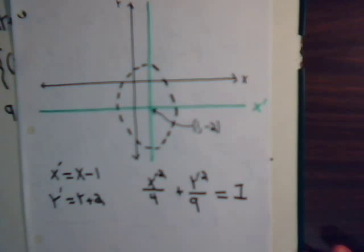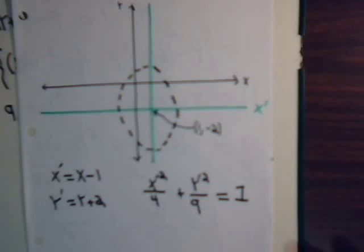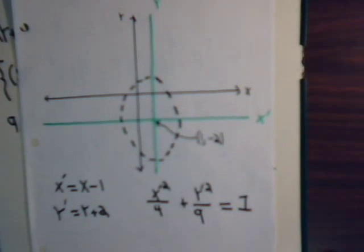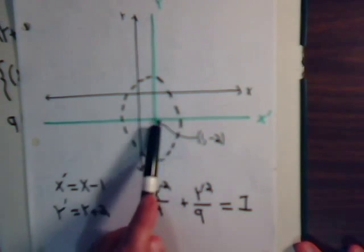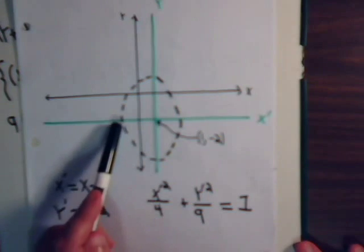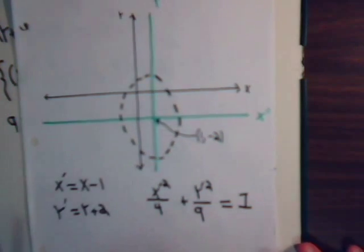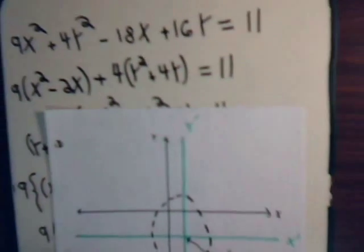Then from here, from this equation then, we can try to sketch in the ellipse. Here, this will be going up 3, down 3, to the right 2, to the left 2, and then sketch it in. So this equation right here, where there is no xy term.